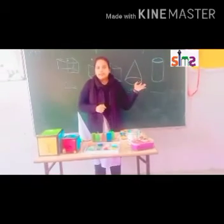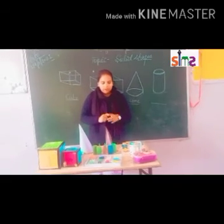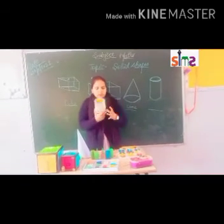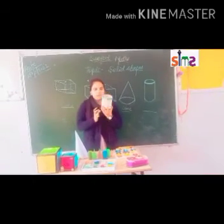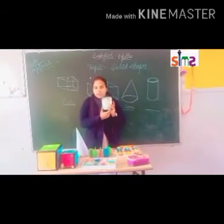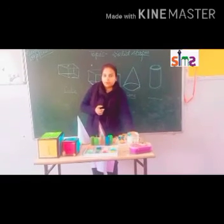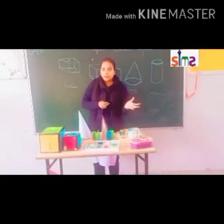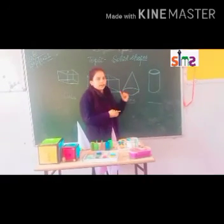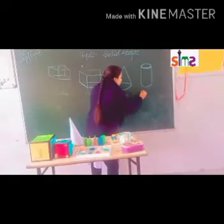The fourth one is cylinder. You can see this box is in cylinder shape, and drum, tank — these are the shapes of cylinder. So we will write here: cylinder.